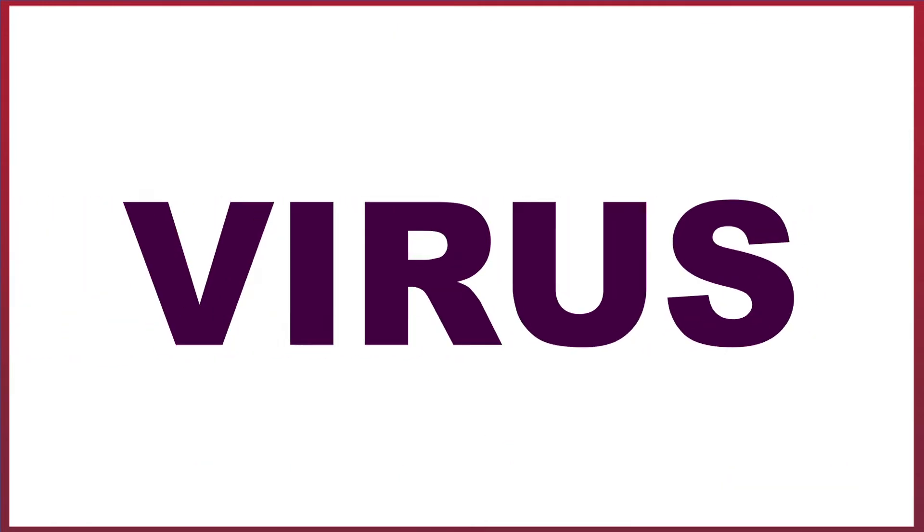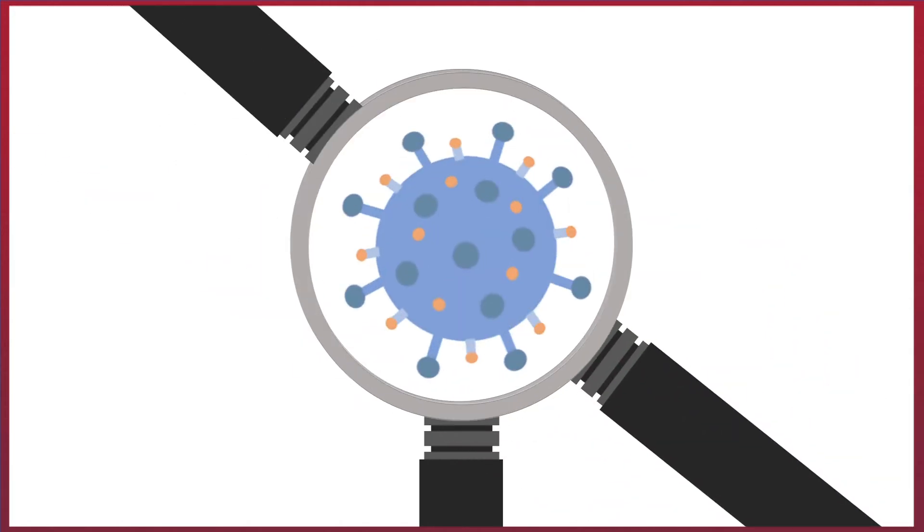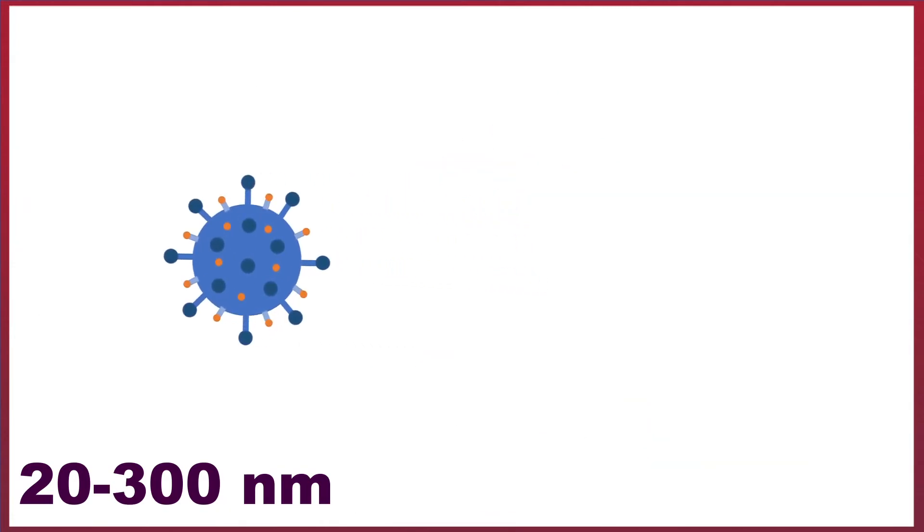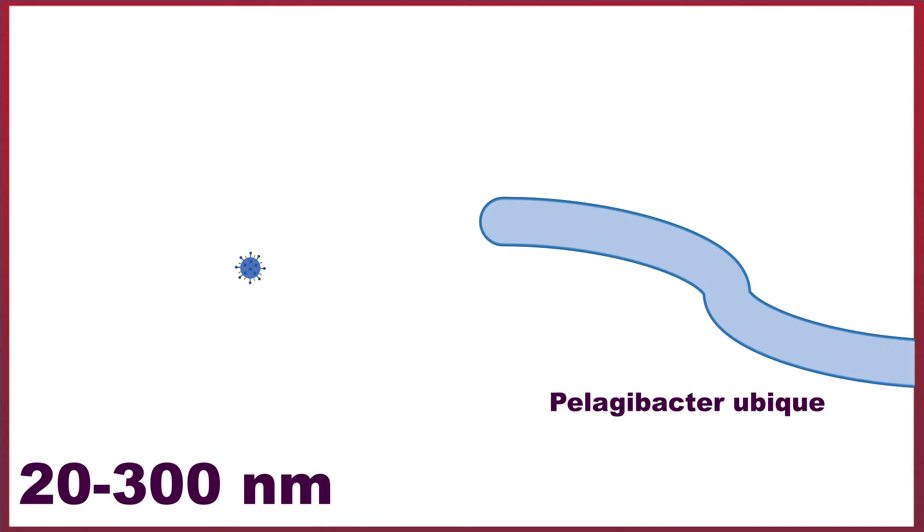So, viruses are tiny. Like, really, really, really tiny. They're normally between 20 and 300 nanometers in diameter. That's over 10 times smaller than the smallest bacteria, Pelagibacter ubique.